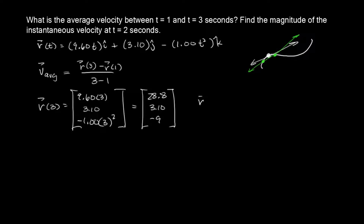For R of one, same thing applies — we plug in one. So the first component: 9.60 times one is 9.60. The middle component doesn't change, so it's 3.10. And the last component is negative one times one squared, which is just negative one.